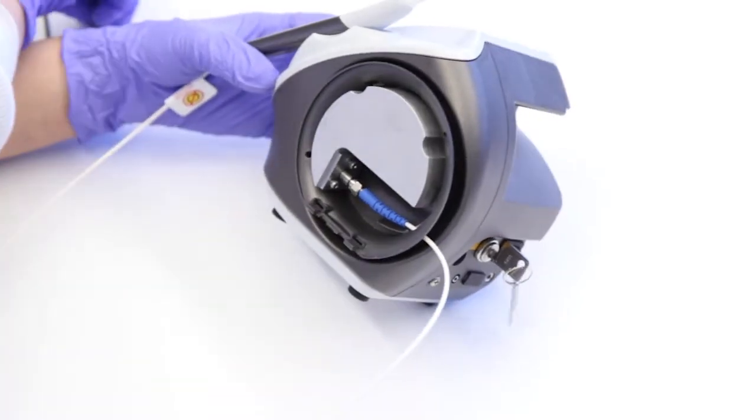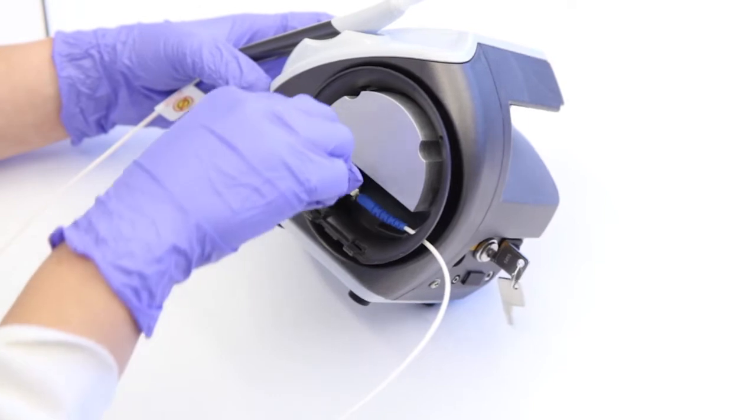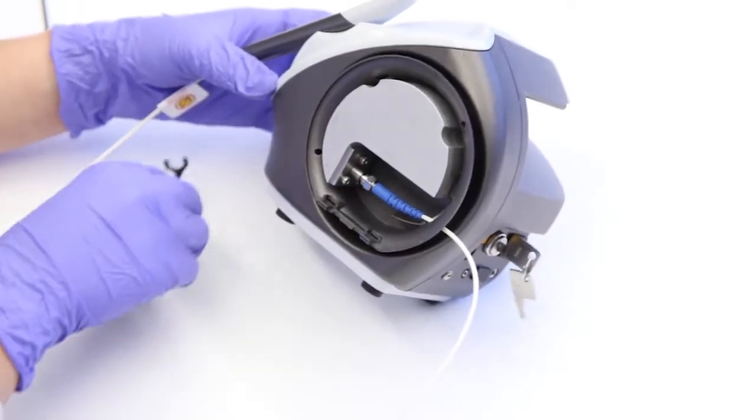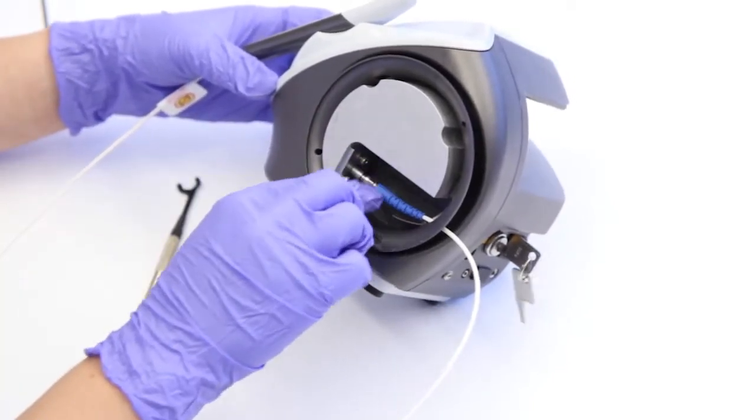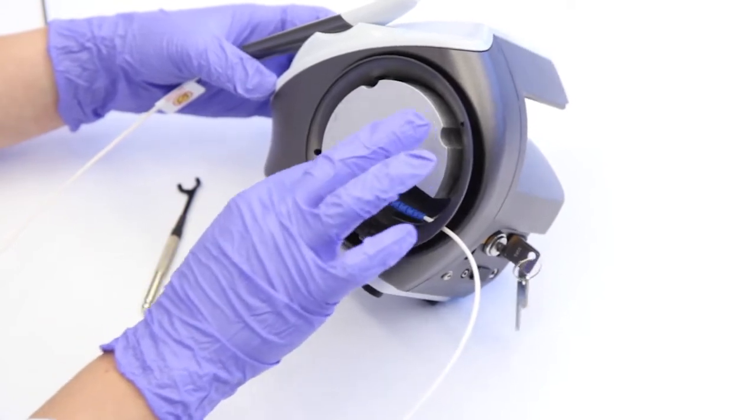Take the wrench and place it on the SMA connector and unscrew with one turn of the wrench to loosen. Then, use your fingers to continue unscrewing the connector from the diode aperture.